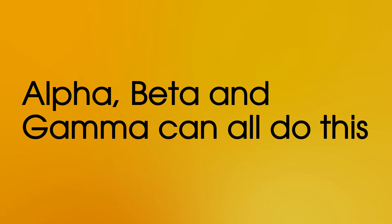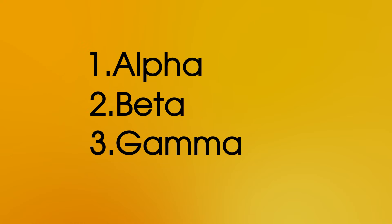So alpha, beta and gamma can all do this, but it turns out that alpha does it easiest, followed by beta, with gamma being the worst. Now let's see why.